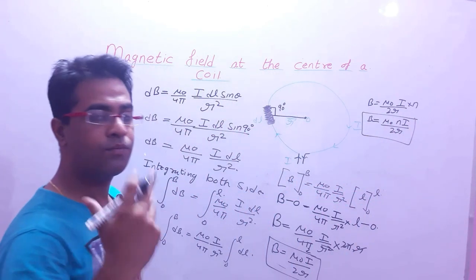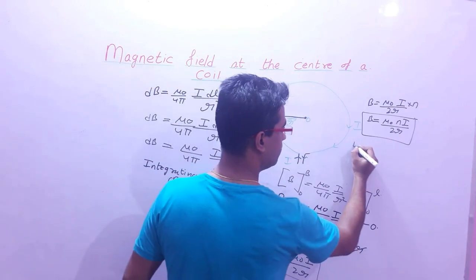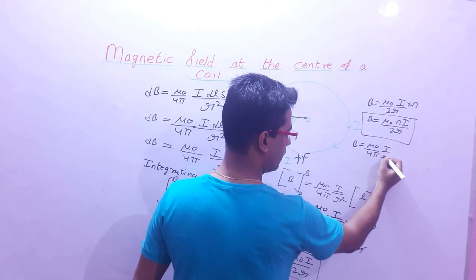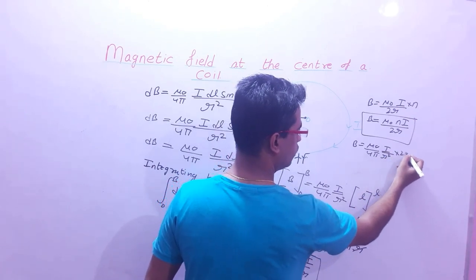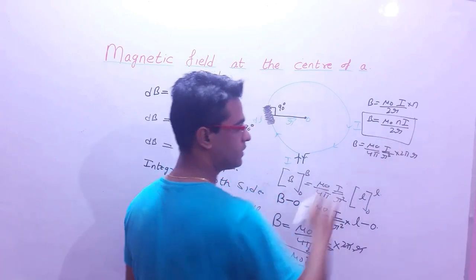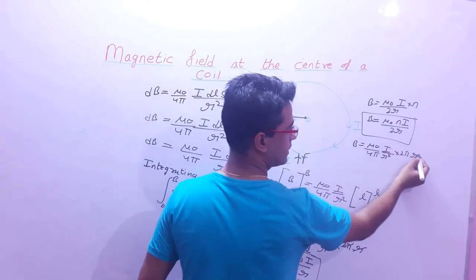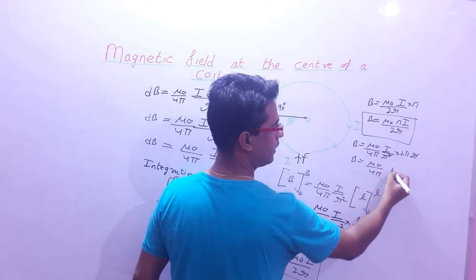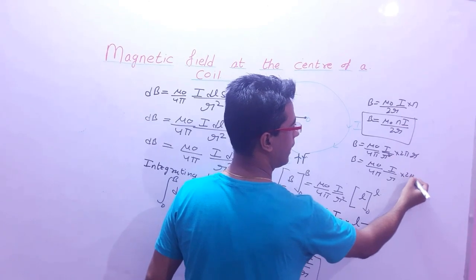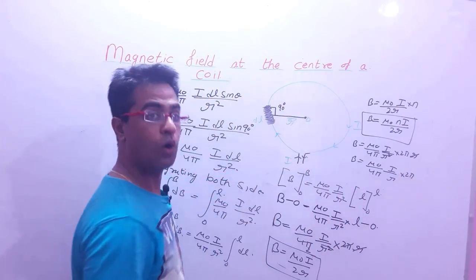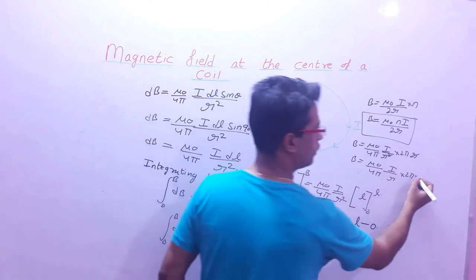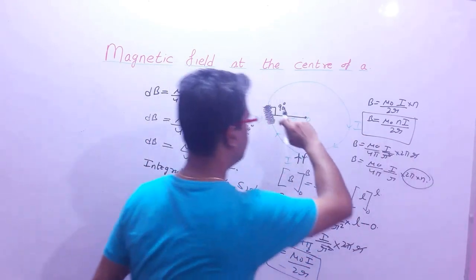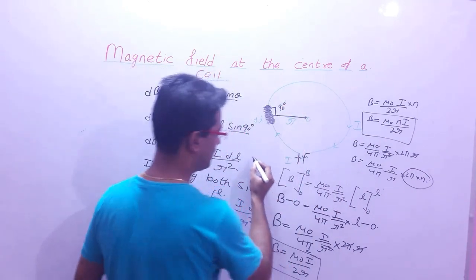अब एक general formula निकाल सकते हैं: B = μ₀/4π · I/r² · 2πr। यहाँ से simplify करें — B = μ₀/4π · I/r · 2π। 2π पूरे circle के लिए है, और N turns हों तो into N multiply करेंगे। यह general formula है।